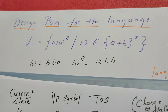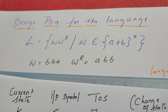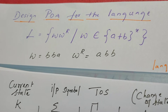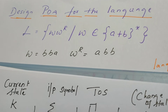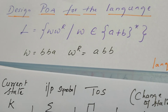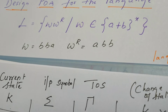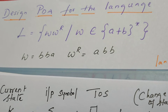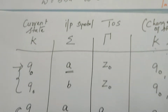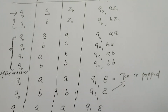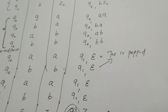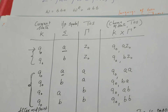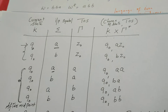Hello all, this is a continuation of my previous video in which we designed the PDA for the language of even palindromes. In this video I'm going to explain the instantaneous description, and also once again we are going to analyze the transition rules which I have already framed. This is the design of the PDA — these transition rules explain the design of the PDA.